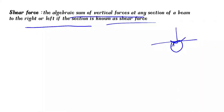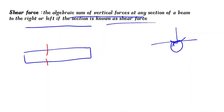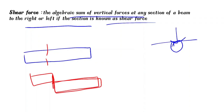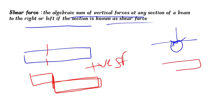For positive and negative shear force: if the left side of a section has an upward force and the right side has a downward force, that is positive shear force. If the right side is upward and the left side is downward, that is negative shear force.